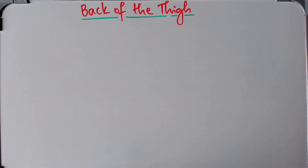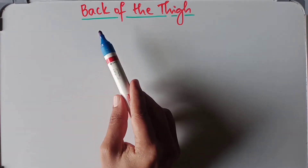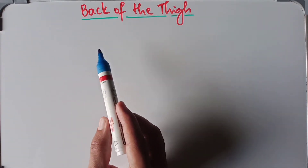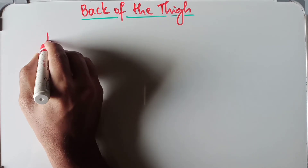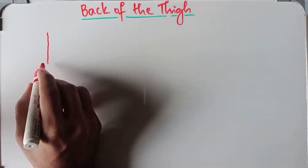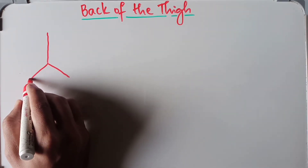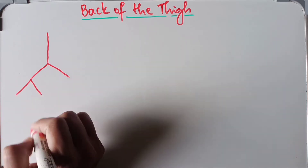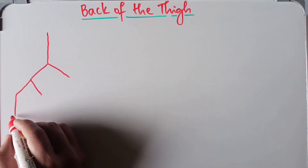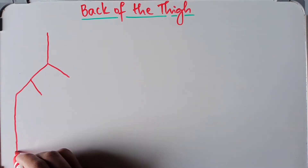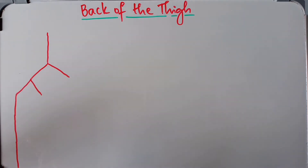Welcome back. In this video we are going to discuss the arterial anastomosis on the back of the thigh — what are the different arteries that supply the back of the thigh. We begin with the abdominal aorta, which passes down and divides into the right and left common iliac arteries. These further subdivide into the external iliac artery and the internal iliac artery. As the external iliac artery passes under the inguinal ligament, it continues as the femoral artery, which then continues as the popliteal artery as it reaches the knee.